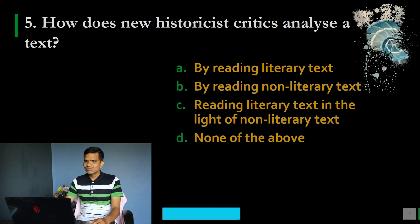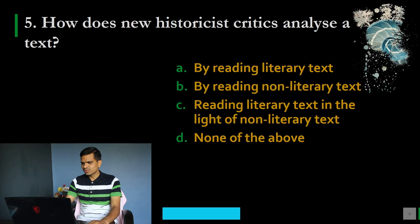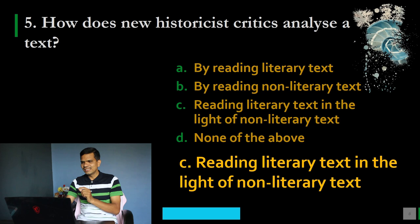Question number 5: How do new historicist critics analyze a text? Options: A. By reading literary text, B. By reading non-literary text, C. Reading literary text in the light of non-literary text, D. None of the above. The correct answer is option C: reading literary text in the light of non-literary text. There is a close relation according to these critics between literary and non-literary texts of the same historical period.